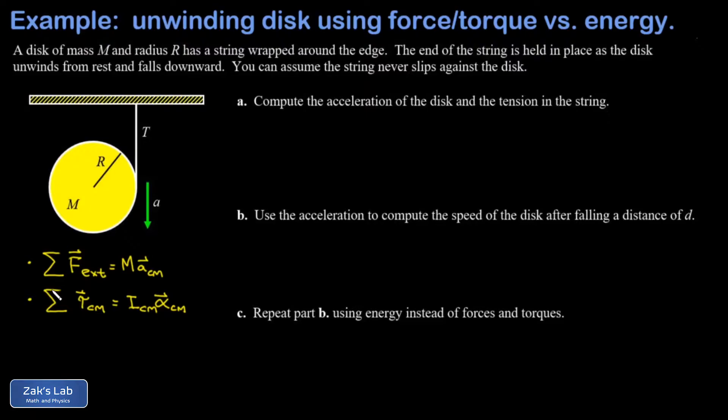In part A, we're trying to find the acceleration of the disk and the tension in the string. As a qualitative check, that acceleration should be less than free fall because there's a tension pulling upward on the disk — so something less than g. The tension should also be less than the weight of the disk; otherwise the disk wouldn't be accelerating downward. We start by looking at all the forces acting on the disk.